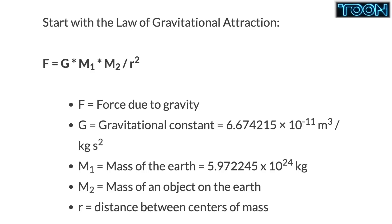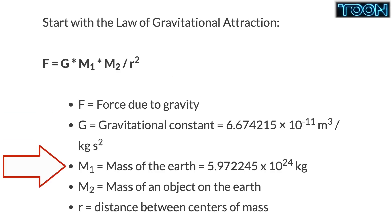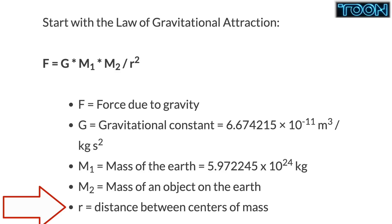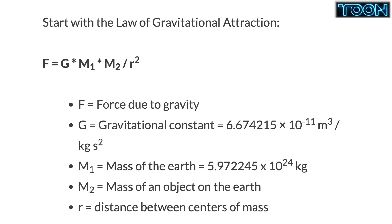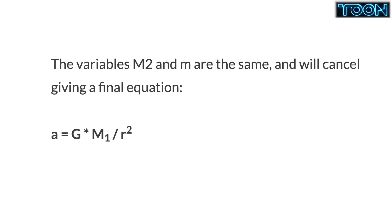First, we calculate the acceleration due to gravity only. We start with the well-known law of gravitational attraction: F equals GM1M2 over R squared, where G is the gravitational constant, M1 is the mass of the Earth, M2 is the mass of an object near the Earth, and R is the distance between the centers of mass of the two objects. But we want acceleration, not force, so we need to use the second law of motion, F equals MA, where F is the force applied, M is the mass of the object, and A is the acceleration. We can substitute for F in the first equation — M2 is the mass of the object being acted upon, which cancels — giving A equals GM1 over R squared.